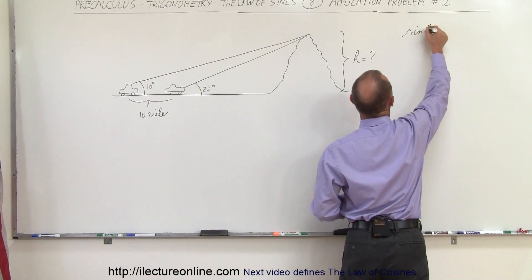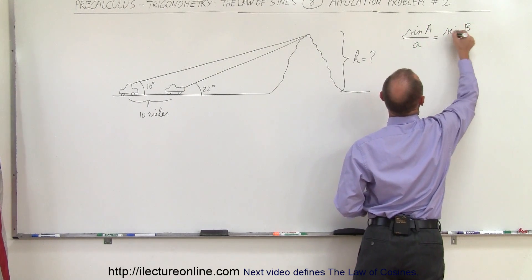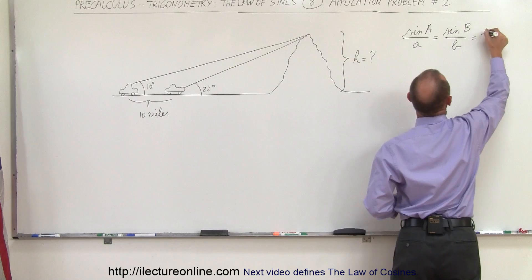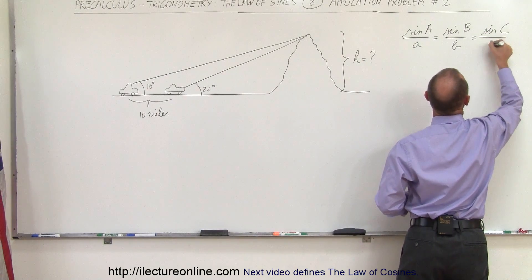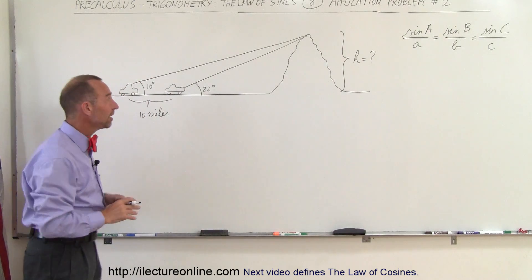We have sine of A divided by side A equals sine of B divided by side B equals sine of C divided by side C. It's always a good idea to label the drawing so you know which is A, B, and C.